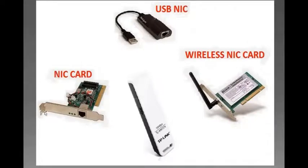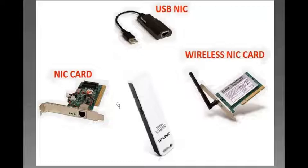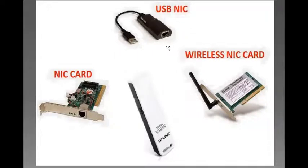Here are a few examples of NICs. This one can be embedded inside a desktop computer through expansion slots on the motherboard. This is an example of a USB wireless interface card, also known as TP-Link USB. This is an example of a wireless NIC that can be installed inside a desktop. And this is an example of a USB LAN card — you connect it to the USB port and then connect the LAN or network wire through the LAN port.